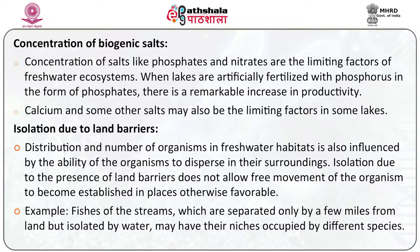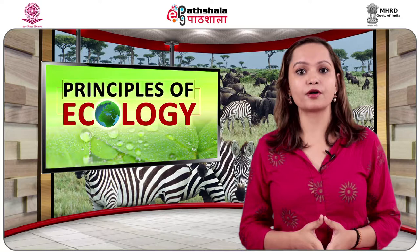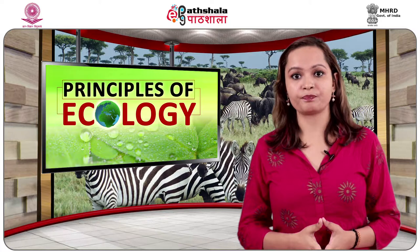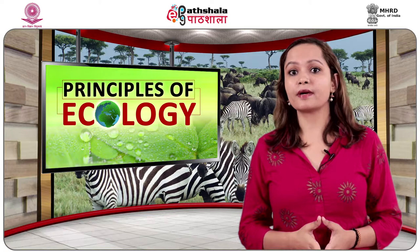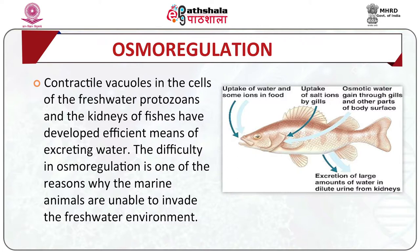Now we come to osmoregulation. The freshwater organisms face a problem of osmoregulation. The concentration of salts is greater in the internal fluids of the cells of freshwater organisms than in the surrounding freshwater environment. Therefore, their body fluid is hypotonic and water tends to enter the body by osmosis if membranes are readily permeable to water, or salt must be concentrated if membranes are relatively impermeable. Contractile vacuoles in freshwater protozoans and the kidneys of fishes have developed efficient means of excreting water. The difficulty in osmoregulation is one reason why marine animals are unable to invade and survive in freshwater environments.